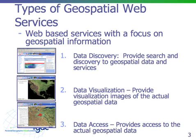There are at least three types of geospatial web services, which are a subset of web-based services with a focus on geospatial information. The first main type is for data discovery, supporting search and discovery of spatial data and services. The second type is for visualization, allowing portrayal or visualization of images of actual geospatial data. The third set is data access services that provide the end user access to actual geospatial data.